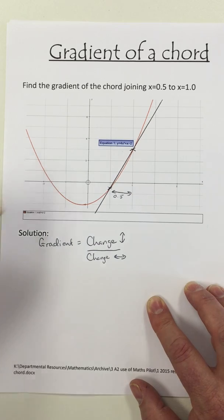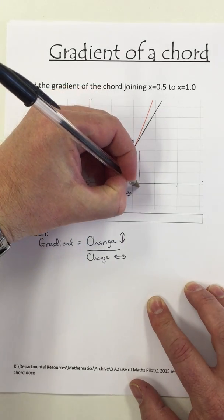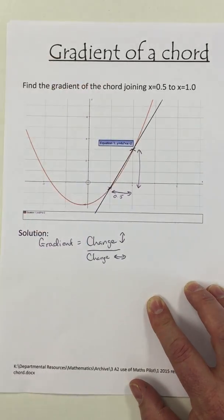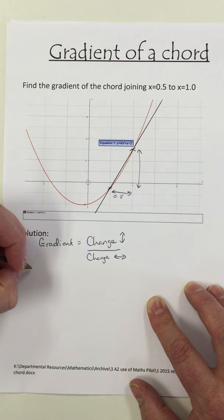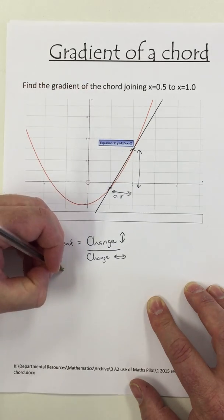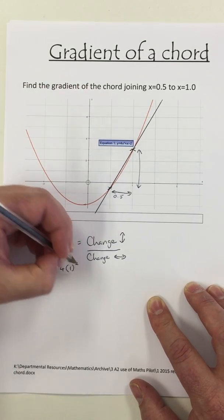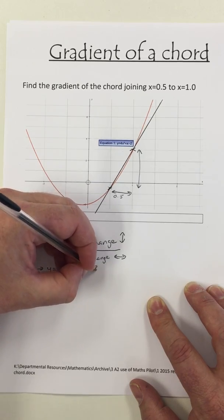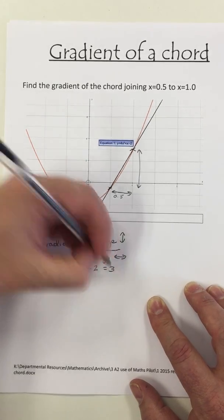What I need though is the change going up. There. So I need the y values. So when x is 1, y will be 4 lots of 1 squared plus 1 minus 2, which is 3.